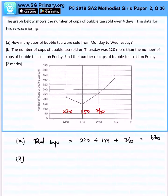Part B, the number of cups of bubble tea sold on Thursday was 120 more than the number of cups of bubble tea sold on Friday. Find the number of cups of bubble tea sold on Friday.